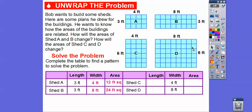For Shed C and Shed D, the width of C is 4 and the width of D is 8. The lengths on both are 6. So 6 times 4 is 24 feet squared, and 6 times 8 is 48 feet squared.